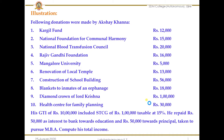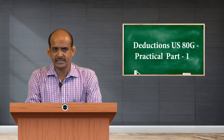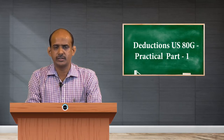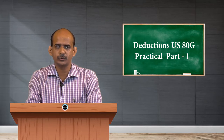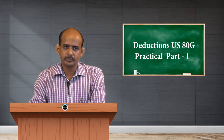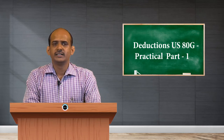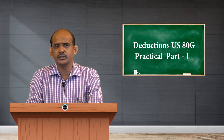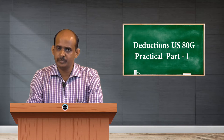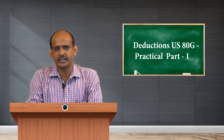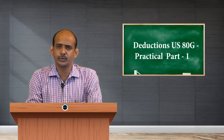His gross total income of rupees 10 lakh included short term capital gain of rupees 1 lakh taxable at 15 percent. He paid rupees 50,000 as interest to bank towards education loan and rupees 50,000 towards principal amount taken to pursue MBA. We are asked to compute his total income.